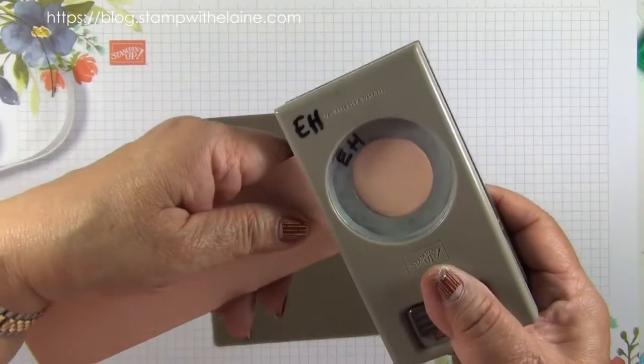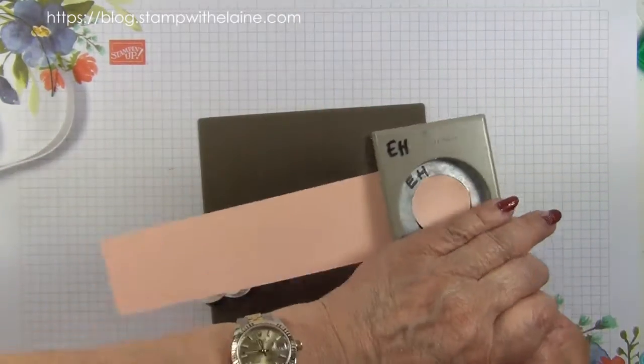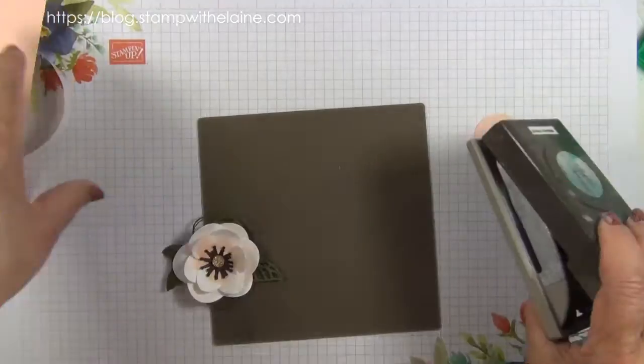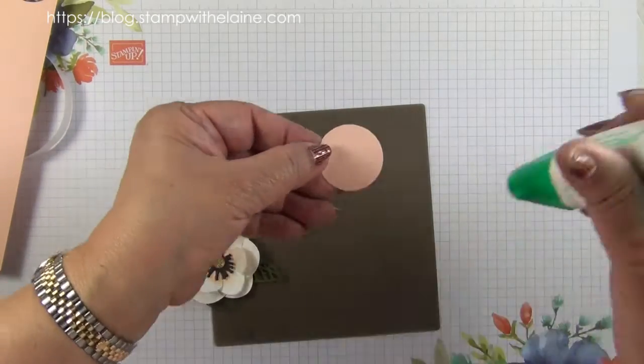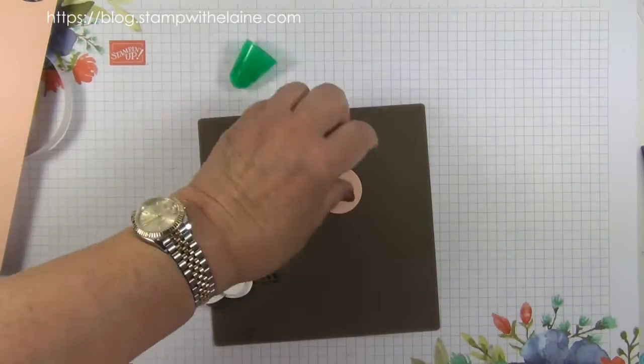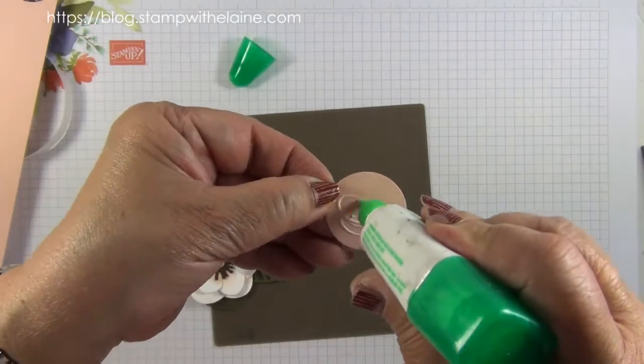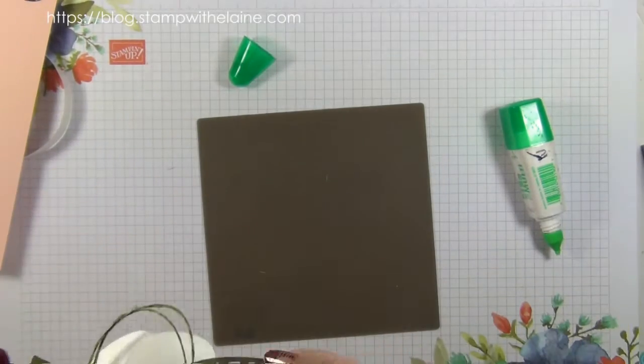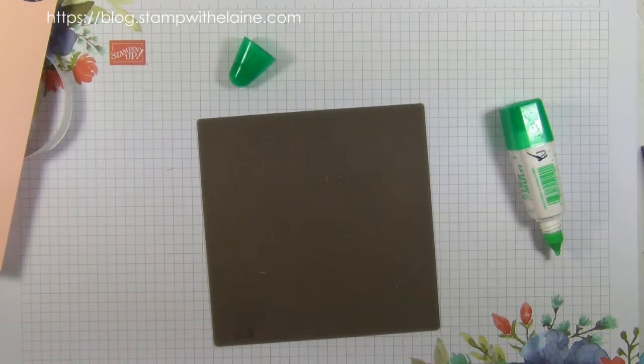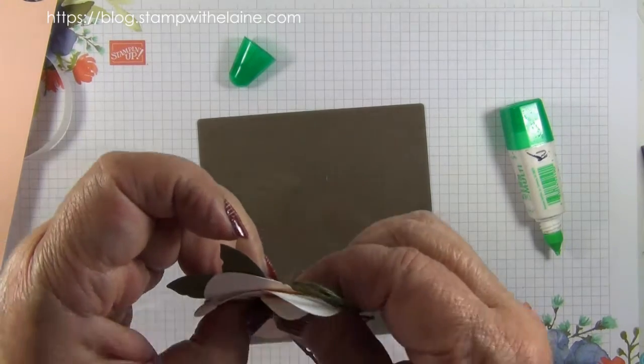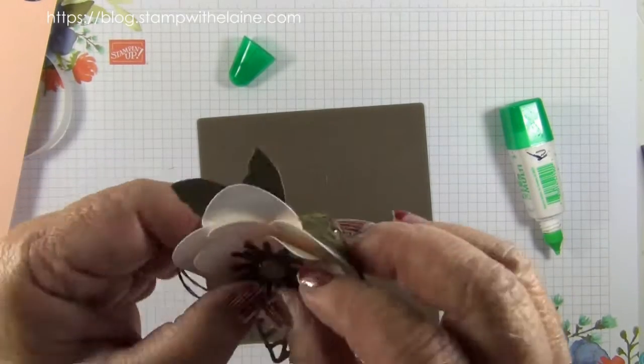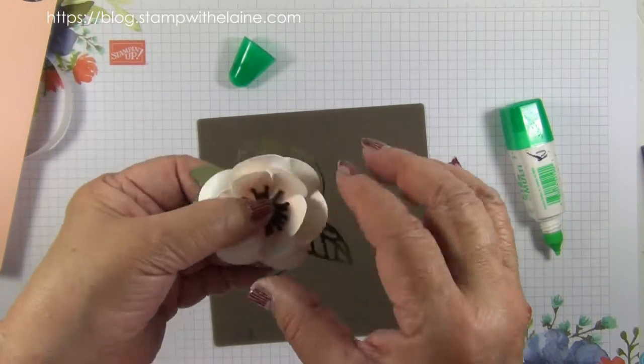Actually it might be an idea just to punch a circle from the circle punch. This one is a 1 and a quarter inch one. I'm just going to pop some glue on the bottom of this, cover it all up, and stick it onto the bottom. Make sure it bonds, and that way it will make it easier to glue to the top of the box.